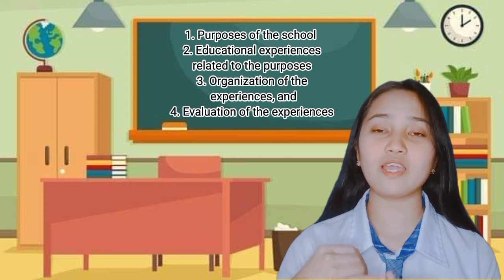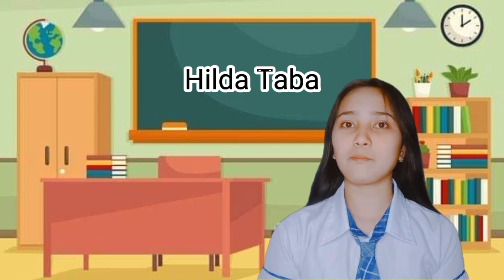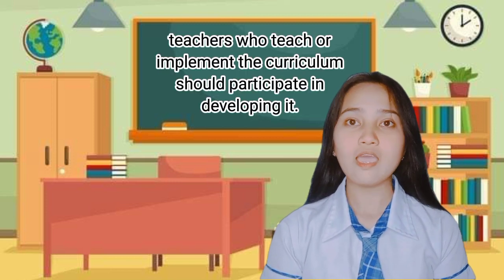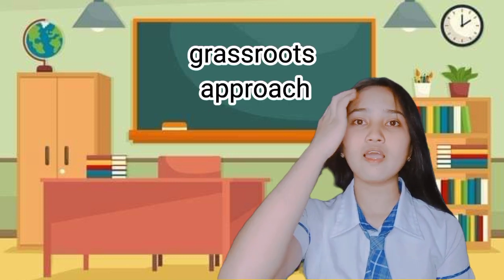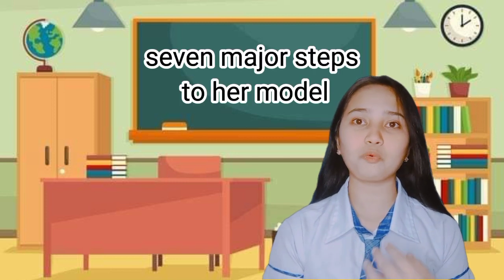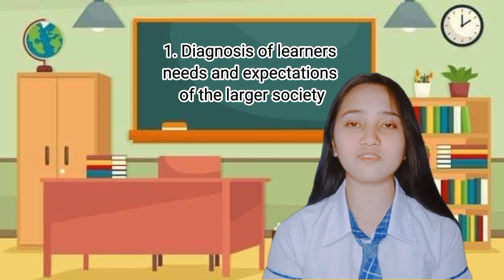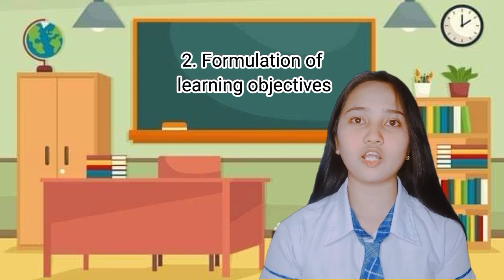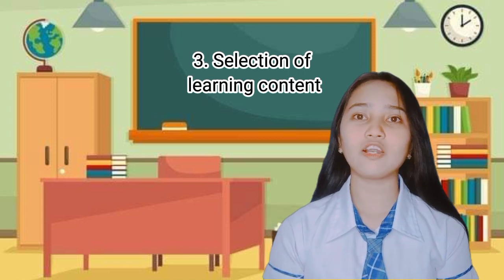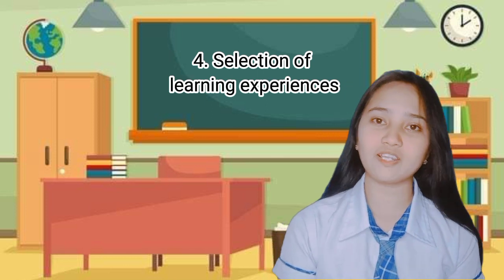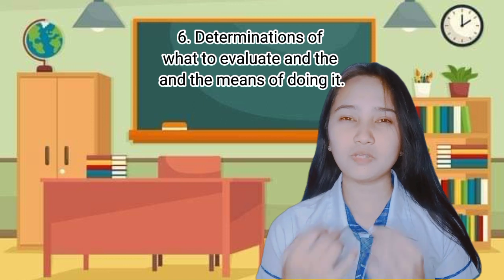Another example of how the curriculum evolved is when Hilda Taba improved Tyler's rationale by making it a linear model. Hilda Taba believed that the teachers who teach or implement the curriculum should participate in developing it. Her advocacy was commonly called the grassroots approach. She presented seven major steps to her model where teachers could have a major input: diagnosis of learners' needs and expectations of the larger society, formulation of learning objectives, selection of learning content, organization of learning content, selection of learning experiences, organization of learning activities, and determination of what to evaluate and the means of doing it.